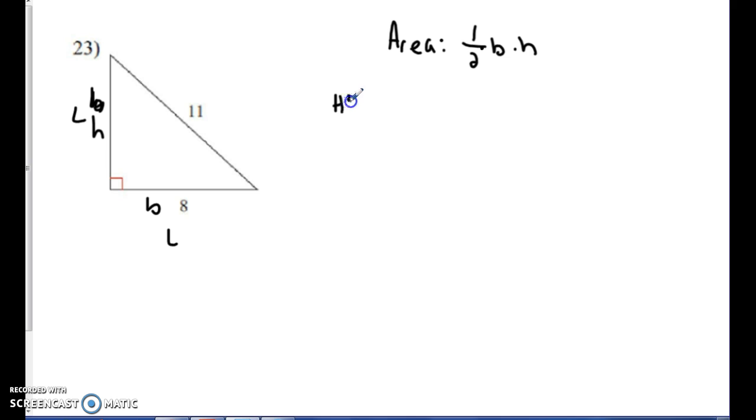So I know hypotenuse squared equals leg squared plus leg squared. So I know 11 squared equals 8 squared plus, in this case, I'll just call it h squared. So I got 121 equals 64 plus h squared. And I will get h squared by itself.